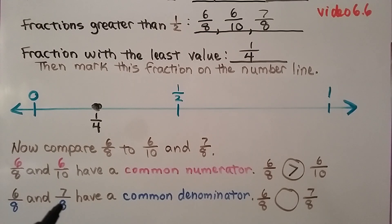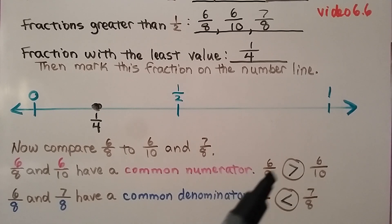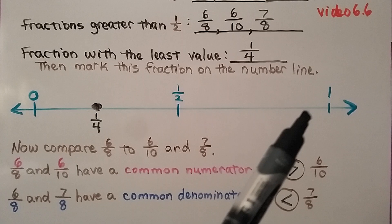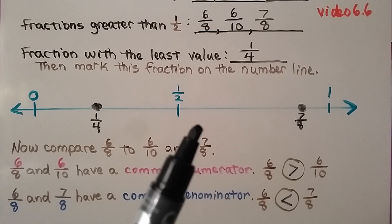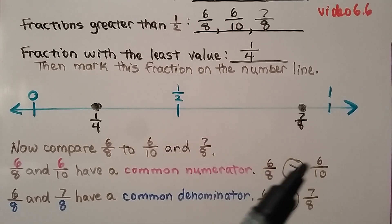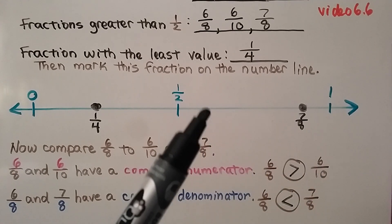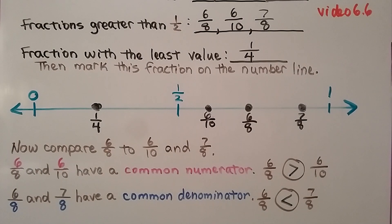We compare six-eighths and seven-eighths — they have a common denominator, so we look at which has the greatest numerator: that's seven-eighths. So six-eighths is less than seven-eighths. Six-eighths is greater than six-tenths, but seven-eighths is greater than six-eighths, so seven-eighths is the greatest. It would be close to one on the number line, since eight-eighths is one. Six-eighths and six-tenths are both greater than half, so they're on the right side, with six-tenths closer to half and six-eighths beyond it.